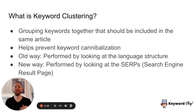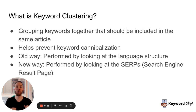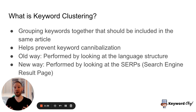Grouping similar keywords so that they can be included in the same article. Oftentimes you might have hundreds or even thousands of keywords, and it can be kind of confusing to figure out which ones should be included in the same article or what keywords should have new articles.